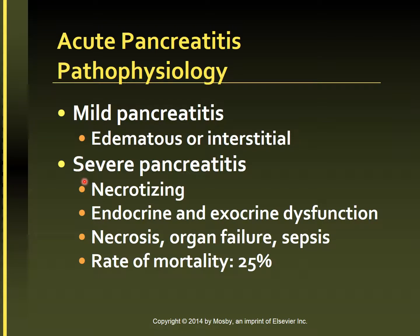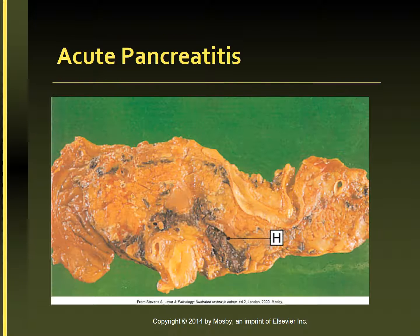In severe pancreatitis, permanent decreases in endocrine and exocrine function occur in approximately half of affected patients. Patients with severe pancreatitis are also at risk for developing pancreatic necrosis, organ failure, and septic complications, which results in a 25% mortality rate. This is a picture of acute pancreatitis — the pancreas appears edematous and is commonly hemorrhagic.